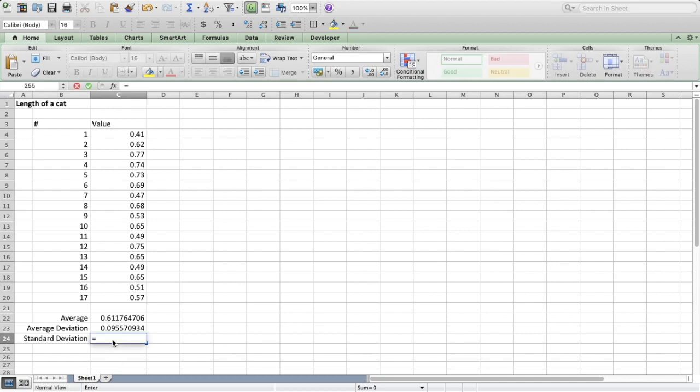This is my average deviation and standard deviation STDEV. Open bracket. Close. Mark the whole thing. Enter. And that's it. So I have my three values from Excel.